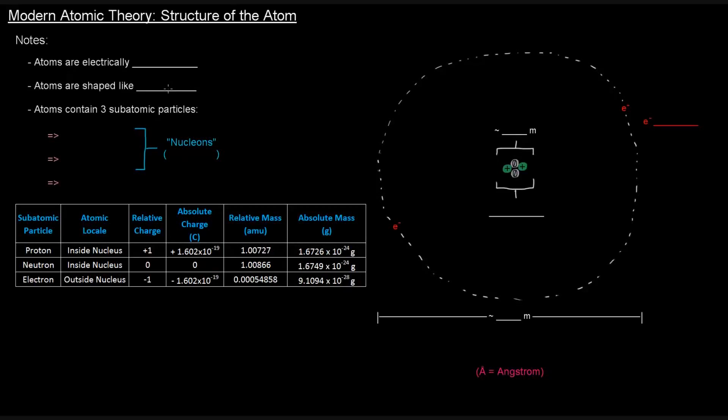So up until recently, we've talked about how atomic theory has sort of developed over the years. But now we're going to talk about modern atomic theory. We'll start with the structure of the atom specifically. So let's go over a few notes.